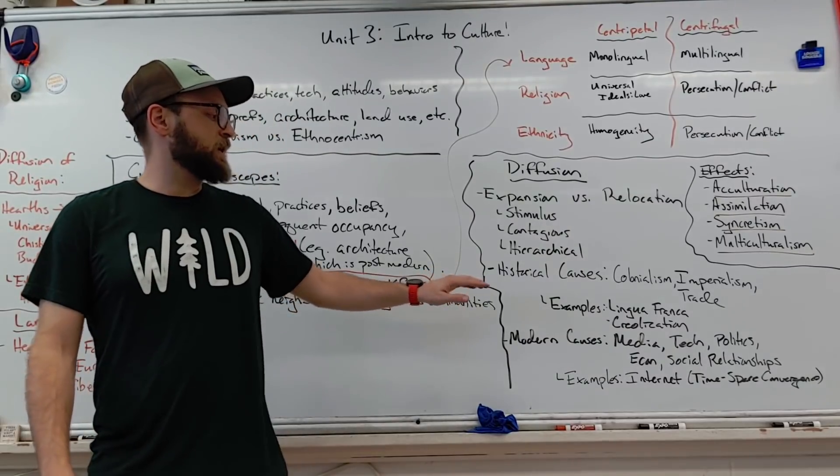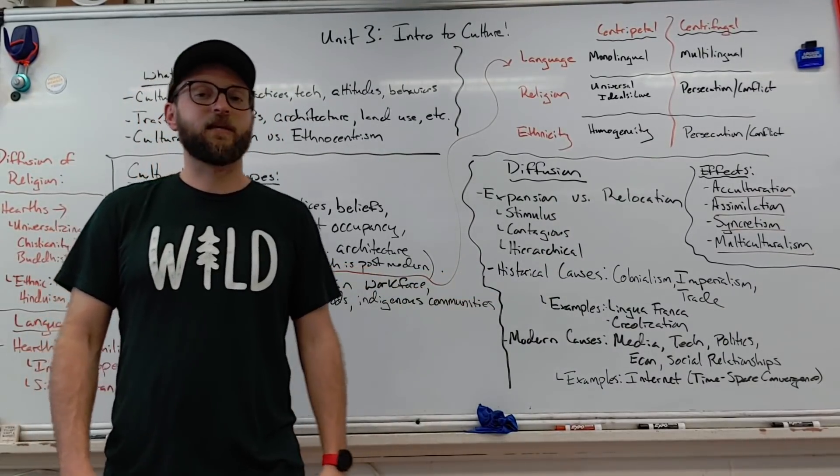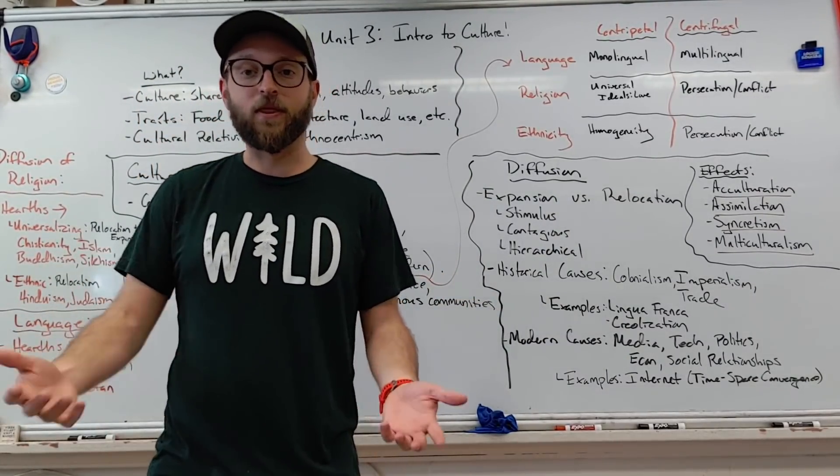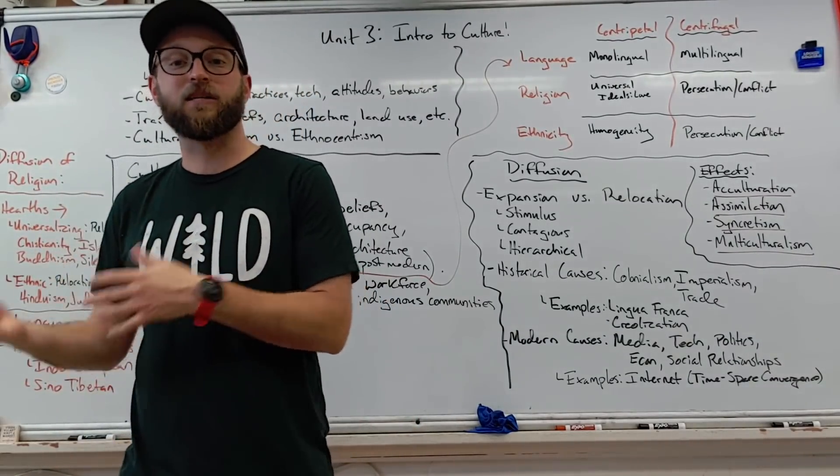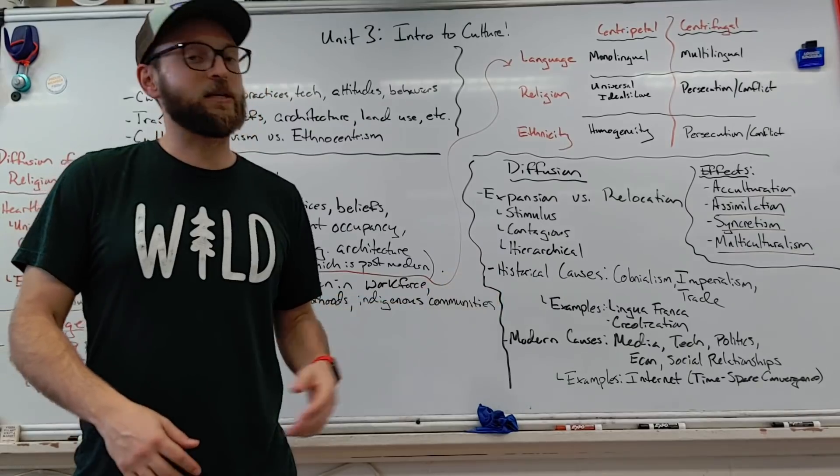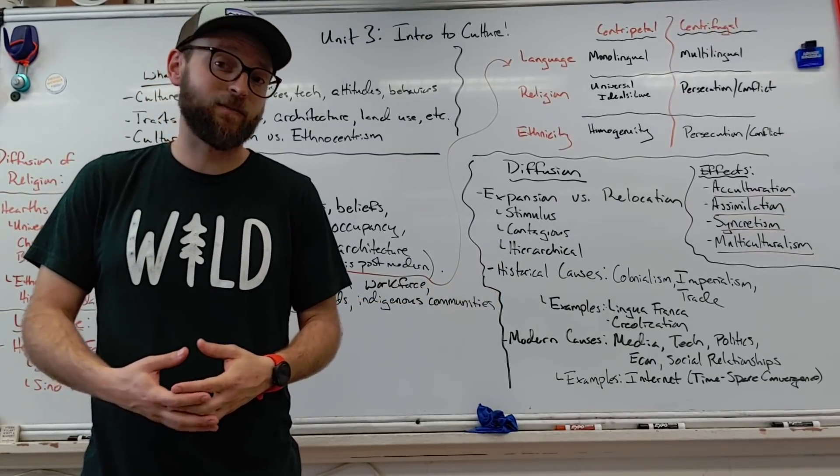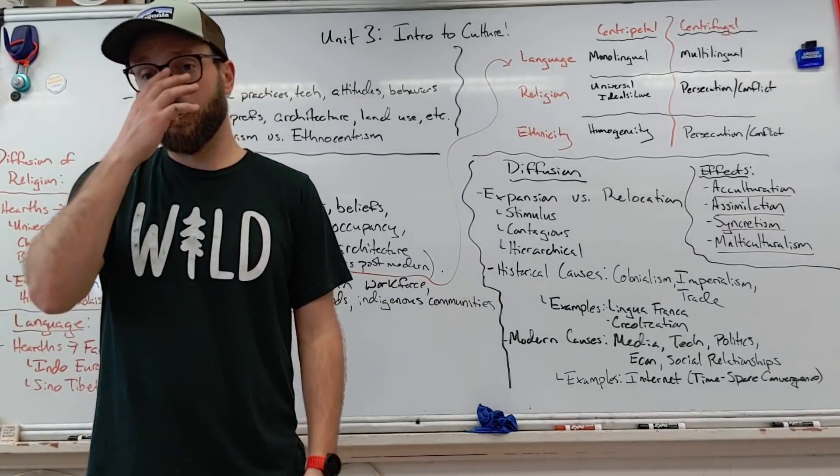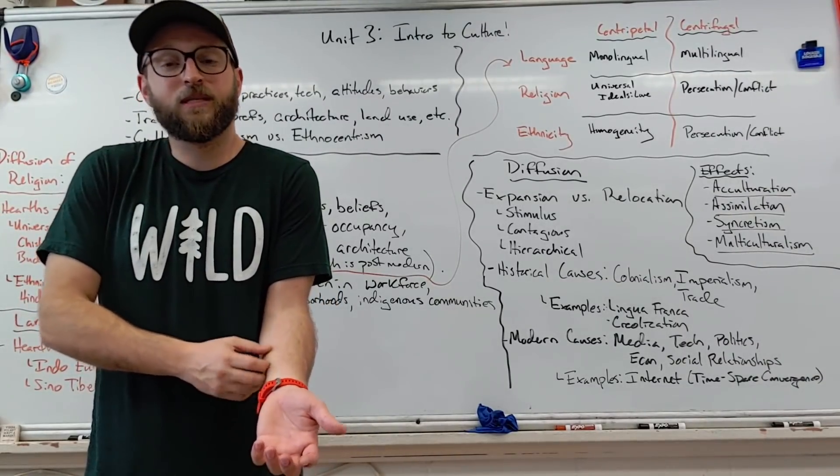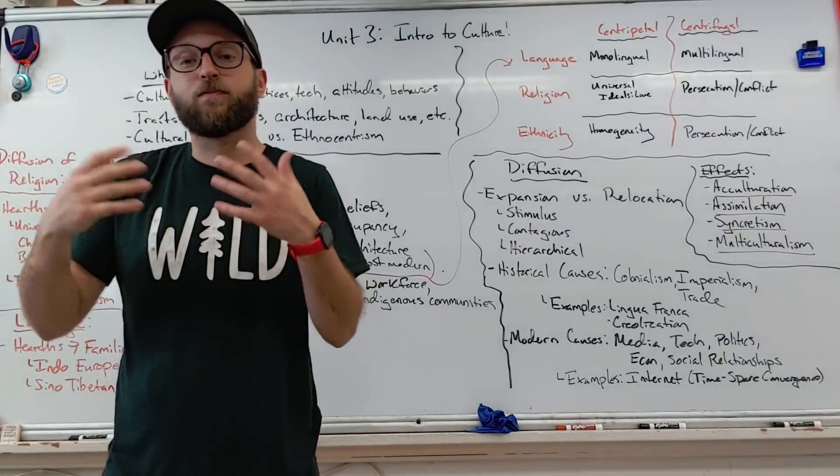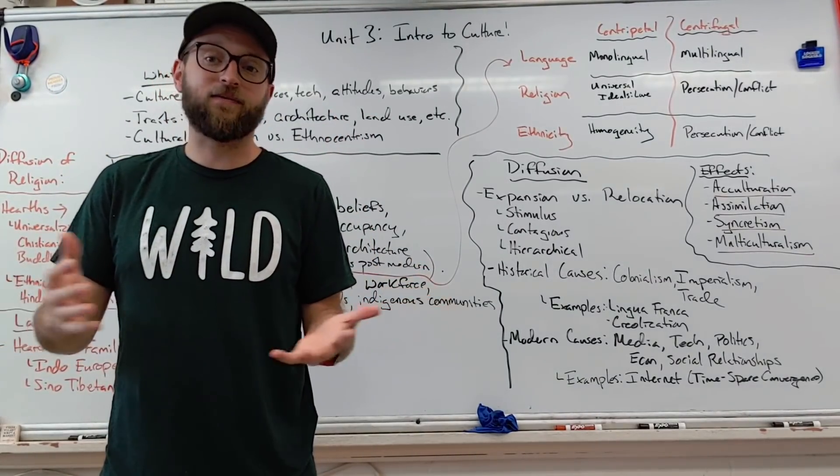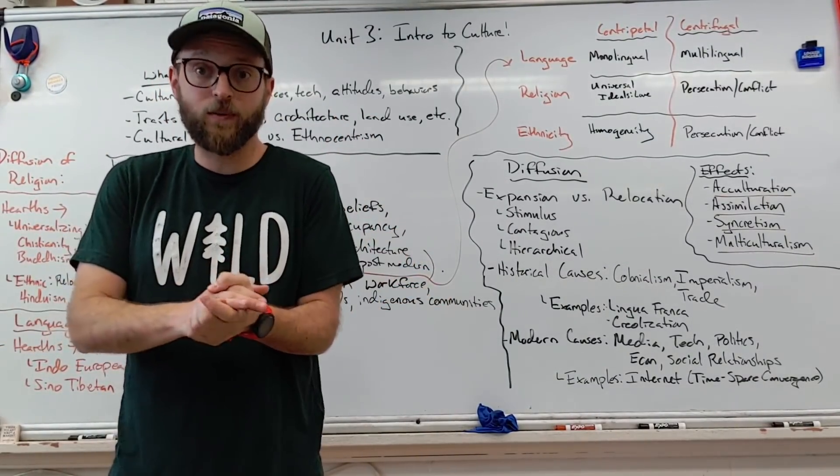So historical causes, the ones that I think are most likely to come up with the exam would be lingua franca. That'd be the mother tongue of the world right now. That's English, but historical ones have also been Latin, Spanish, French, and also creolization, this blending of cultures based on imperialism. The great example are creolized languages, and we see lots of different places that have creolized food groups, people, some places like Haiti even call their language Creole, and for a good reason.